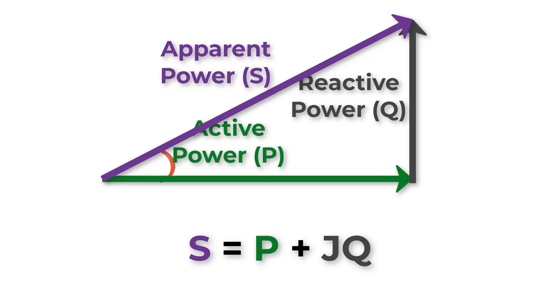The angle between P and S is called phi, which is the same phase shift degree between voltage and current.